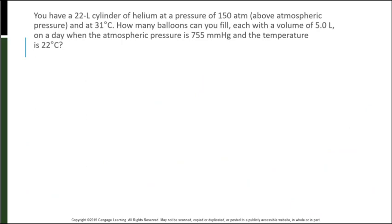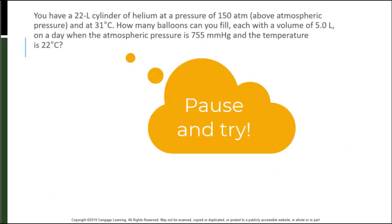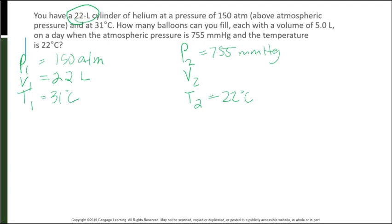Here's our last example for the combined gas law. See if you can fill in the variables. Here's everything I was given from the problem. I was told that I had 22 liter cylinder of helium. So that's my volume. At a pressure of 150 atmospheres. And at 31 degrees Celsius. So I have all of my pressure, volume, and temperatures.